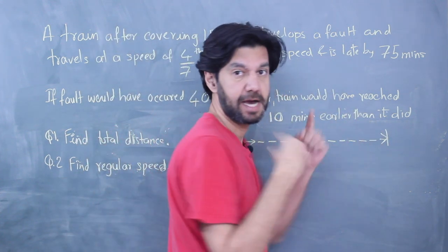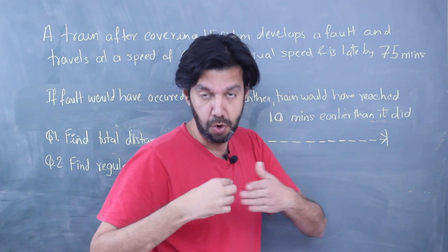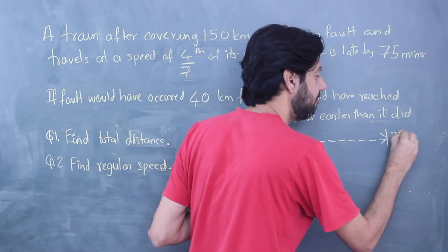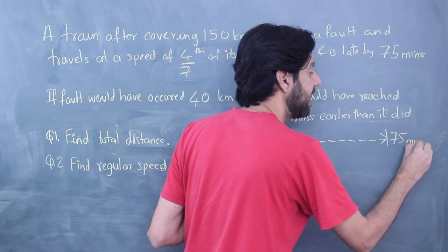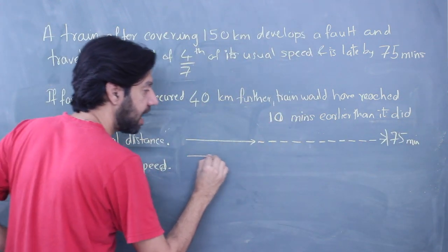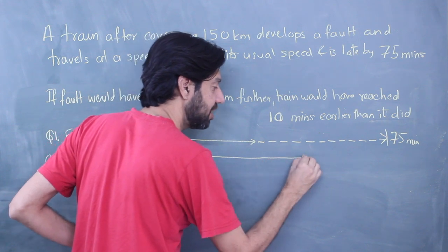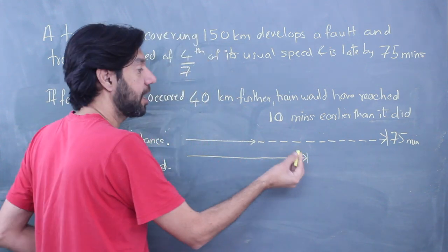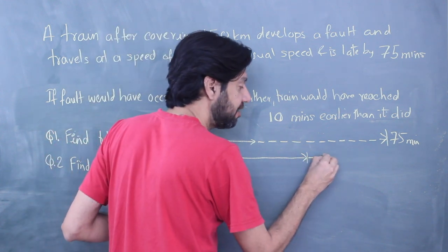Do you see the language? More distance I travel at reduced speed, more late I will be. So I am 75 minutes late. In the second case, had the fault occurred 40 kilometers further, I would have traveled at full speed a little longer.